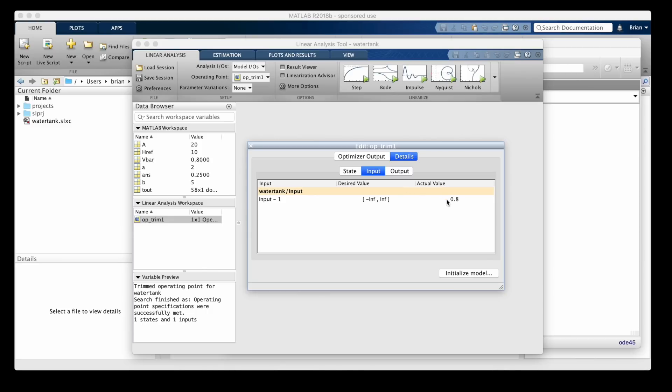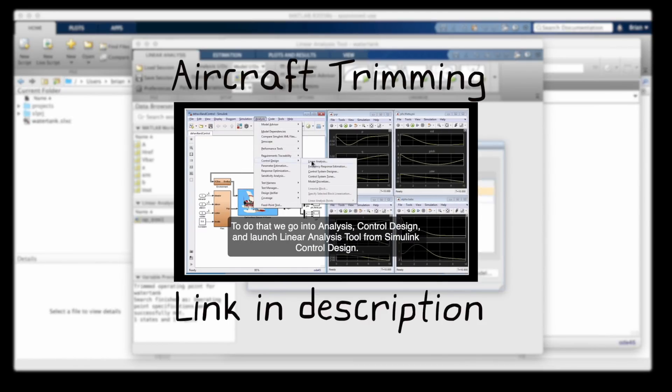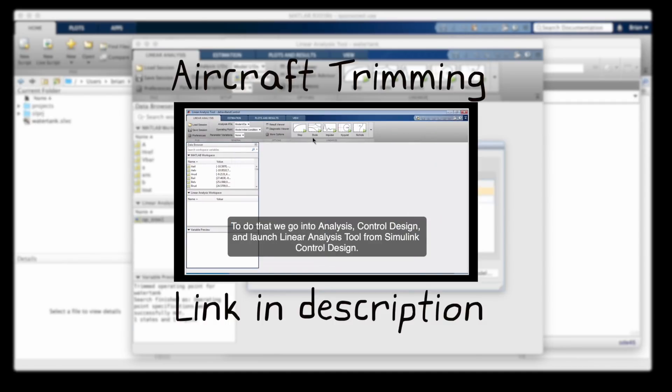And we find that it is in fact 0.8 volts, so that's good. The benefit of the trimming tool is that it works well with complex systems with multiple states and inputs. To see this in action, check out the aircraft trimming example that I've linked to in the description below.